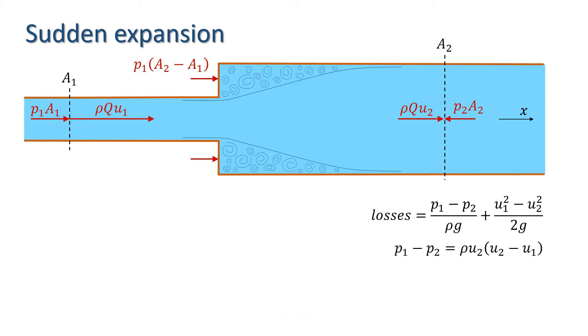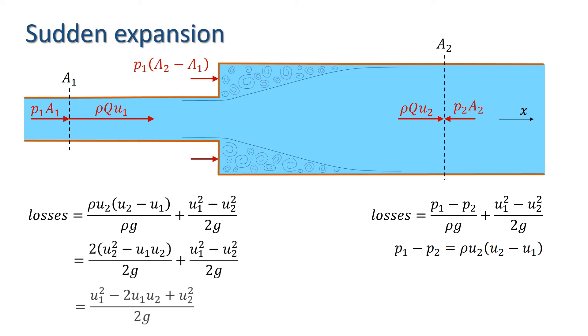Going back to the equation for the losses again, we can substitute the pressure difference term we've just derived. We have an expression for the losses in terms of Rho G and the velocities up and downstream. Doing some tidying up and rearranging, we find that the losses equal the difference in the velocity squared divided by 2G.